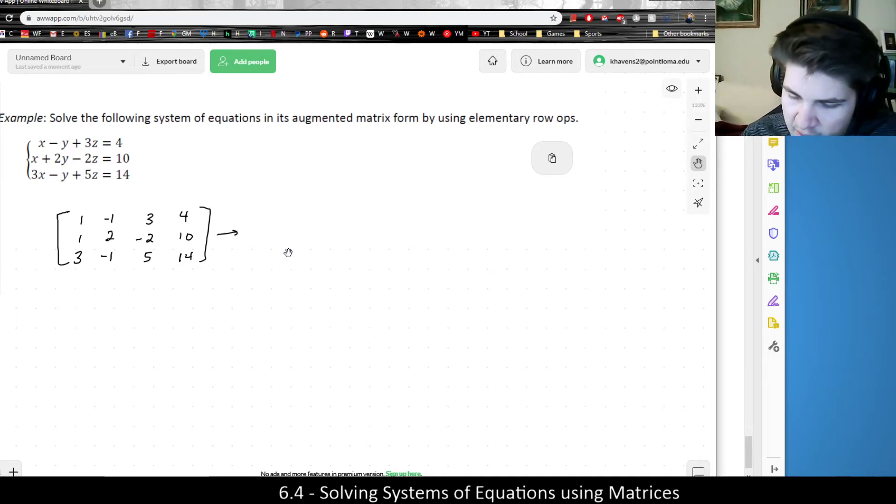First step is to turn the second row and third row's first columns into zeros. So I'm going to take the second row, subtract it from the first row, keep the first row the same. I'm not going to label my work as well. But basically, first row minus second row, negative one minus two is negative three. Three minus negative two is three plus two is five. And four minus ten is negative six.